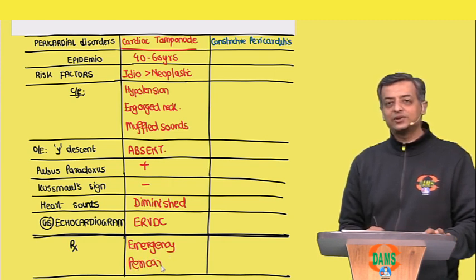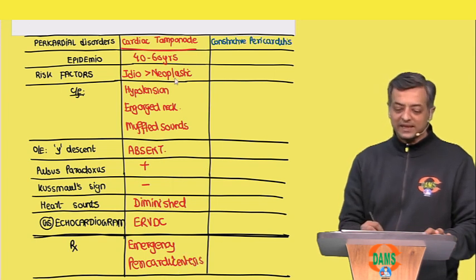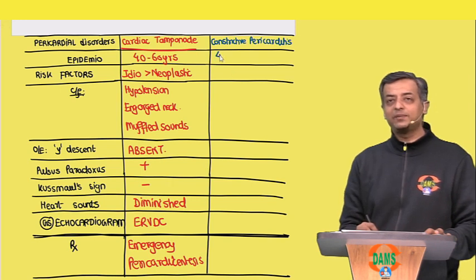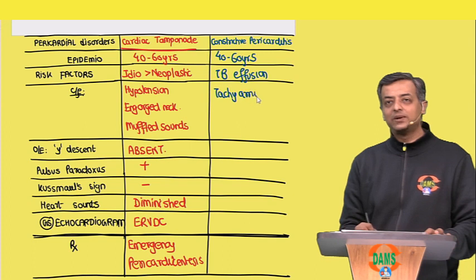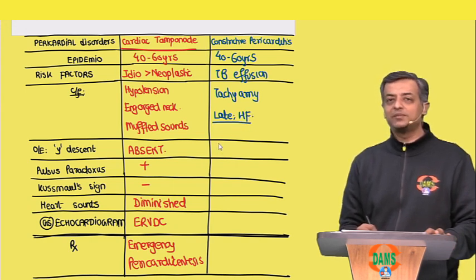When we read like this — like a story — we remember the whole picture about cardiac tamponade itself. The differential, constrictive pericarditis, also presents in the same age group but is most commonly due to TB-related pericardial effusion. In early stages it only presents with risk of tachyarrhythmias, and only in late stages does it present with heart failure.